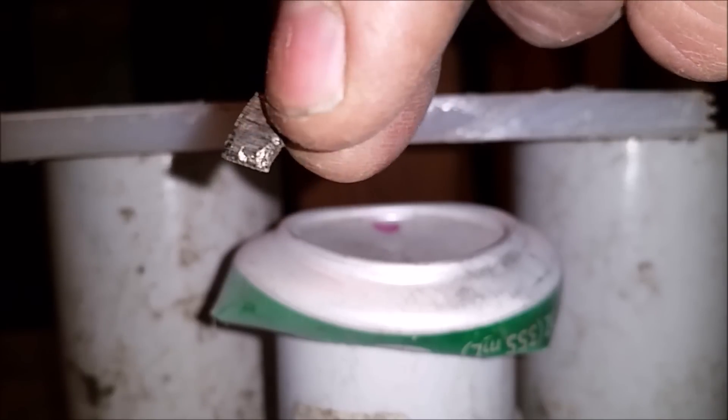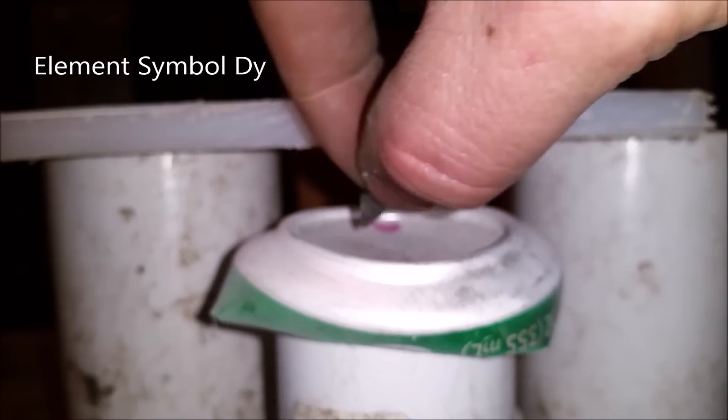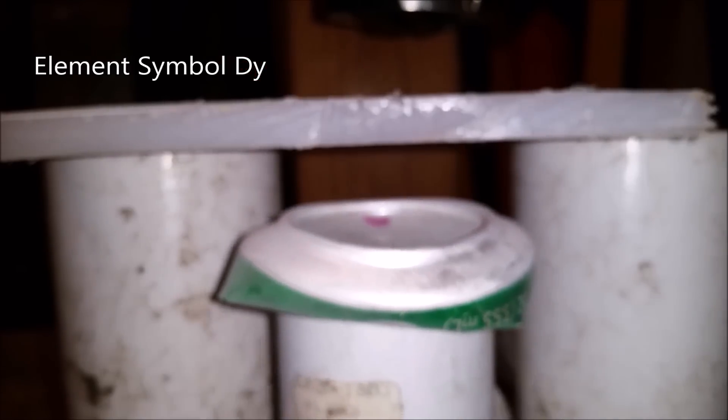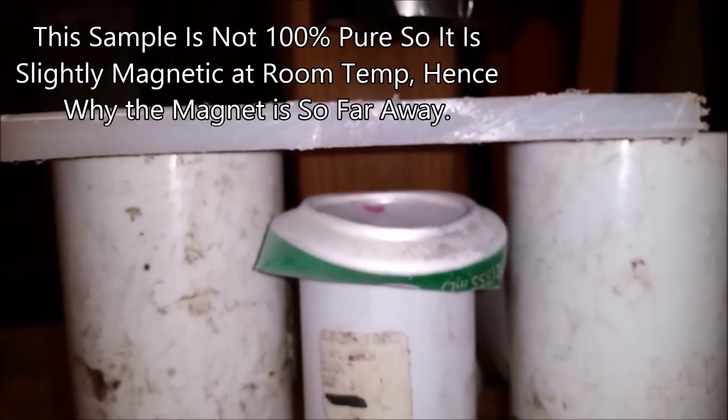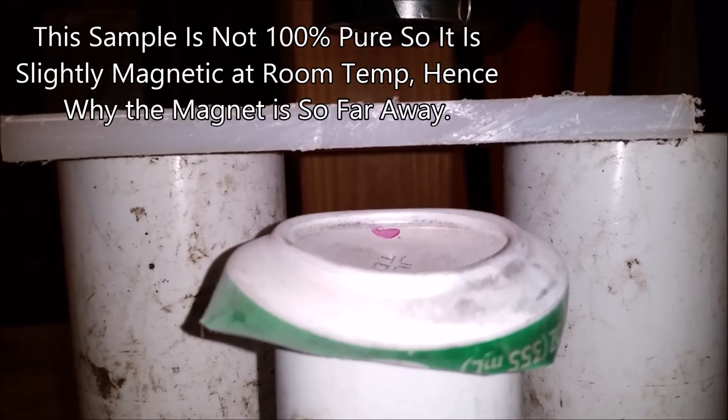And finally this, which you may recognize from my intro, this is a piece of dysprosium metal. So I'm going to put that in here, push it underneath the magnet. You can see that it is not attracted. It does not attract the magnet because dysprosium is non-magnetic at room temperature.